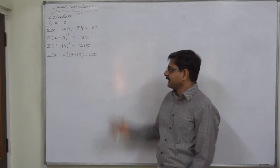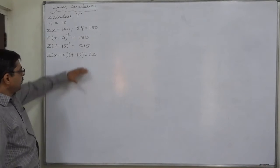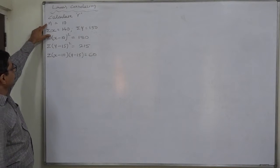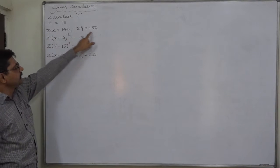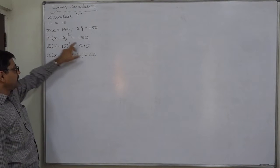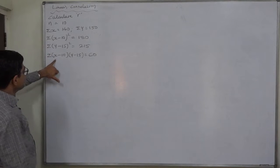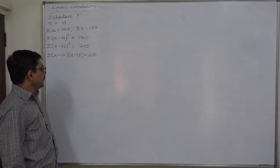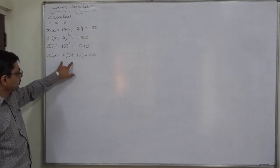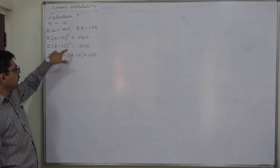Hello and welcome again. I am here with a new case — the calculation of coefficient of correlation. The data given is: n=10, σx=140, σy=150, σ(x−10)²=180, σ(y−15)²=215, and σ(x−10)(y−15)=60. This is a product of deviations, but the question is whether these are deviations taken from the arithmetic mean or from an assumed mean.